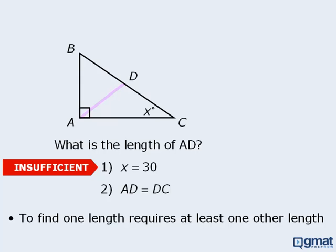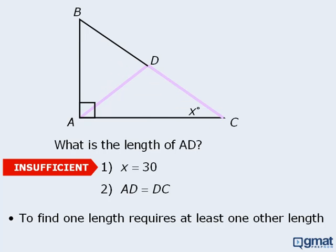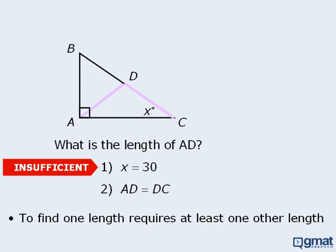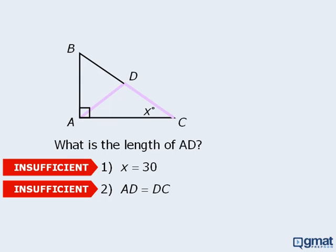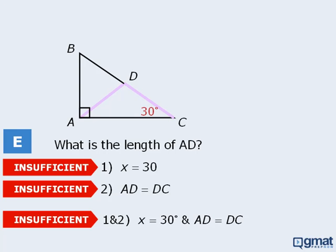Statement 2 does not provide any lengths either. It tells us that sides AD and DC have the same length, but we are not told what that length is. We can take our diagram and make it larger and smaller while still maintaining equal lengths for sides AD and DC. Since statement 2 does not force side AD into having just one length, it is not sufficient. Even when we combine the two statements, we still do not know any of the lengths in the diagram, meaning there is no way to determine the length of side AD. So statements 1 and 2 combined are not sufficient, and the answer is E.